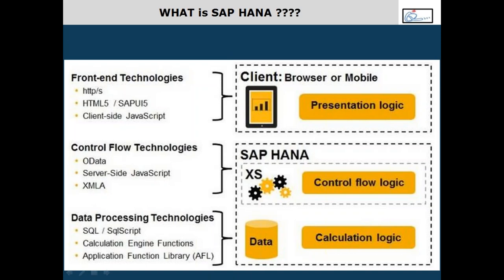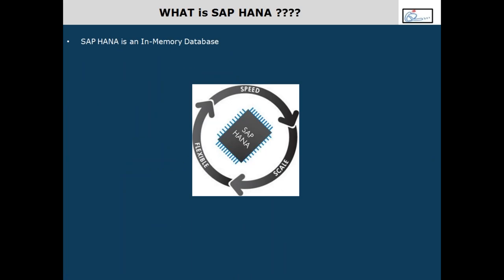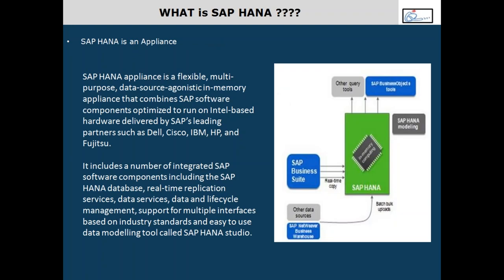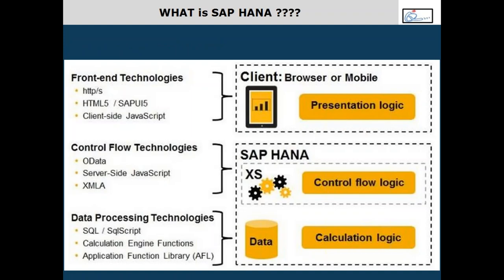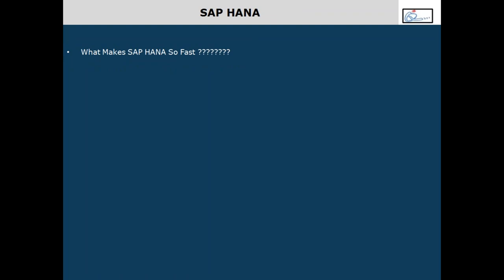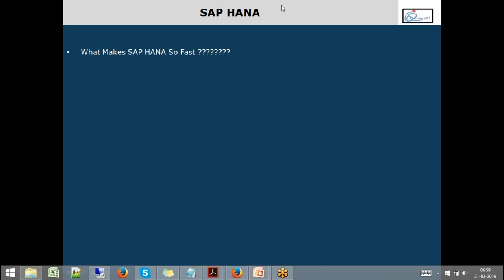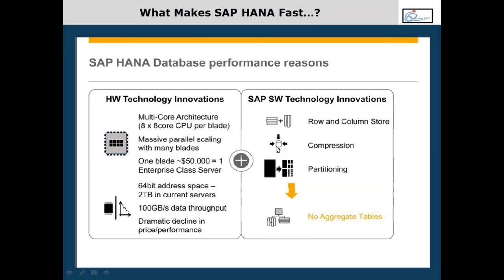In the last class we covered what HANA is — just like a normal database, but it's an in-memory database where it stores and processes data in main memory. It's also a platform because it comes along with certain hardware capabilities as an appliance, and it has its own access engine or application server where you can deploy your own applications. Now we're trying to focus on what makes HANA so fast. There are certain hardware capabilities and certain software innovations making it fast.